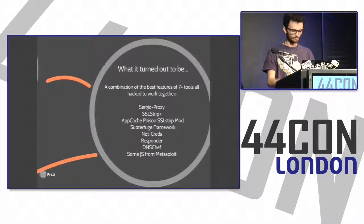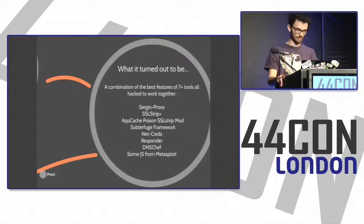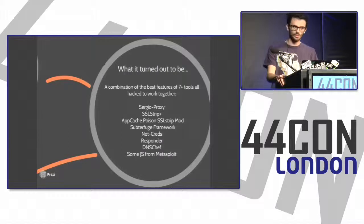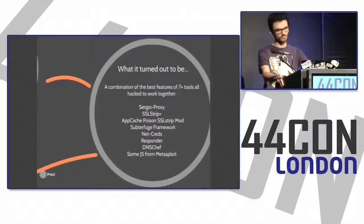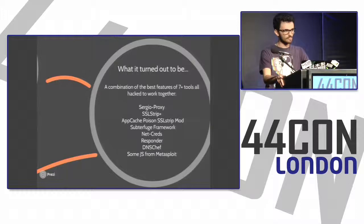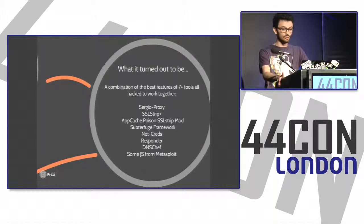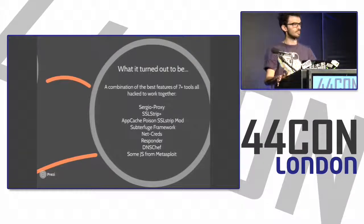What I really wanted to drive home with this talk is what you can actually do using a modern tool when you're the man in the middle — when you're in that privileged network position. Unfortunately, a lot of people tend to underestimate this attack vector, especially blue teamers, who seem to think it's not a big deal. That's partially because pen testers up until now really did not have an efficient tool to take full advantage of this privileged network position.